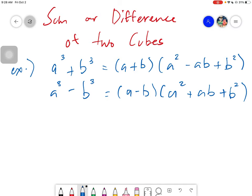So basically, the structure of your given will be like this one. You must have a cube, two cubes, and you must have a sum or difference. Either you have a sum or difference of two cubes.